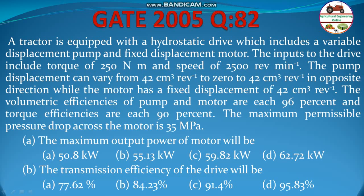A tractor is equipped with a hydrostatic drive which includes a variable displacement pump and fixed displacement motor. The input to the drive includes a torque of 250 Newton meter and speed of 2500 RPM. The pump displacement can vary from 42 cm³/rev to 0 to 42 cm³/rev in the opposite direction, while the motor has a fixed displacement of 42 cm³/rev. The volumetric efficiency of pump and motor are 96% and torque efficiency are each 90%. The maximum permissible pressure drop across the motor is 35 MPa. We need to find the maximum output power of the motor and the transmission efficiency of the drive.